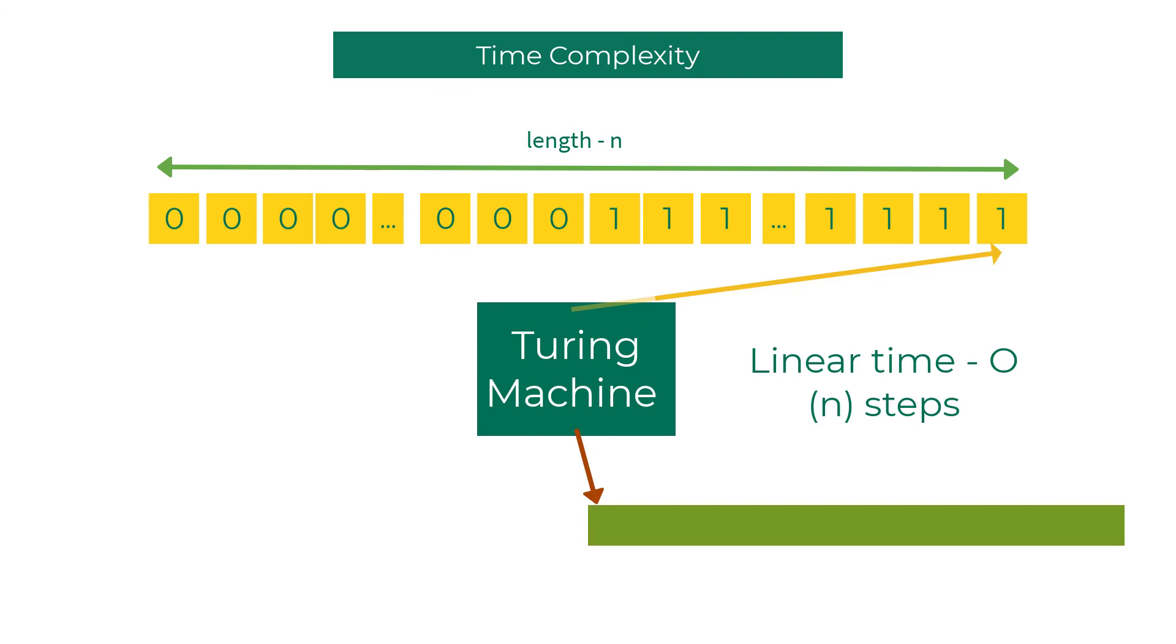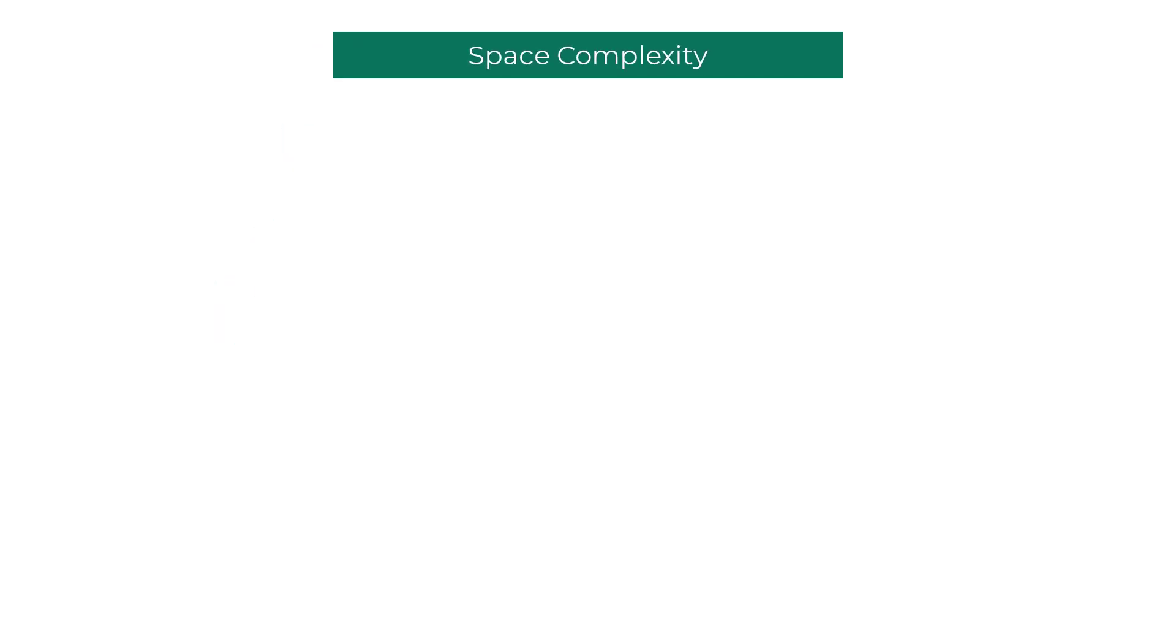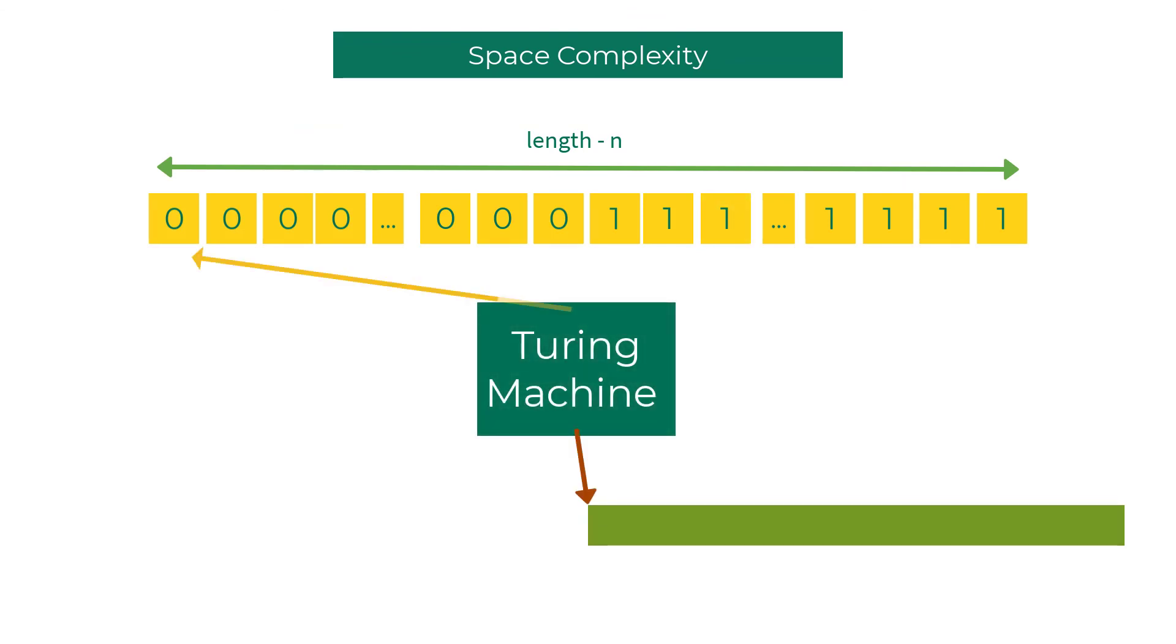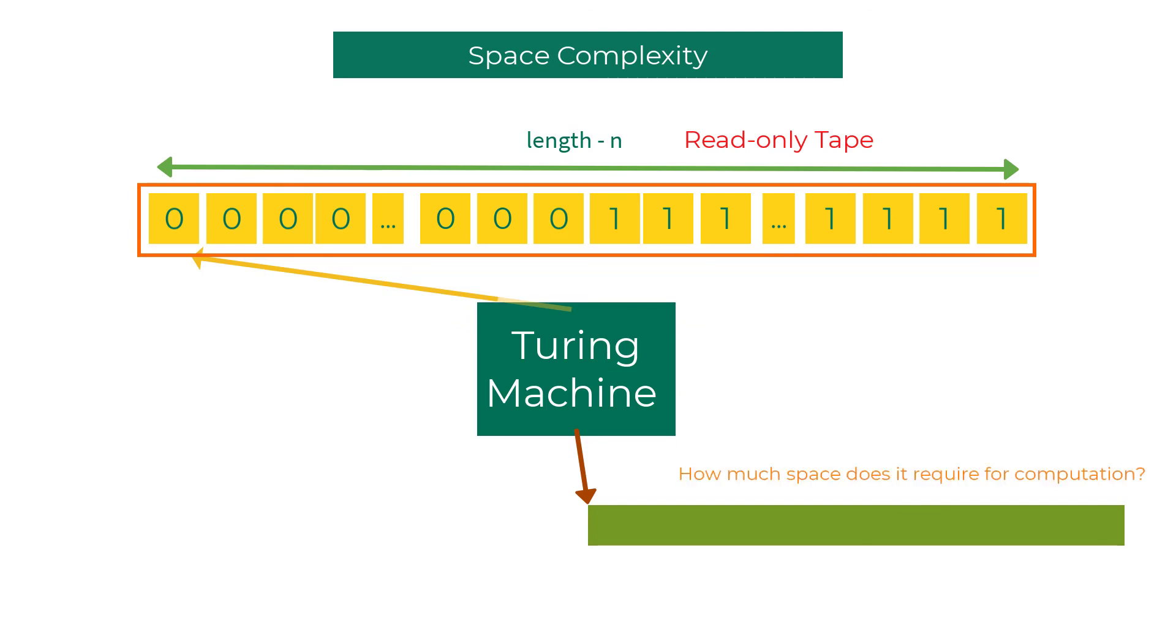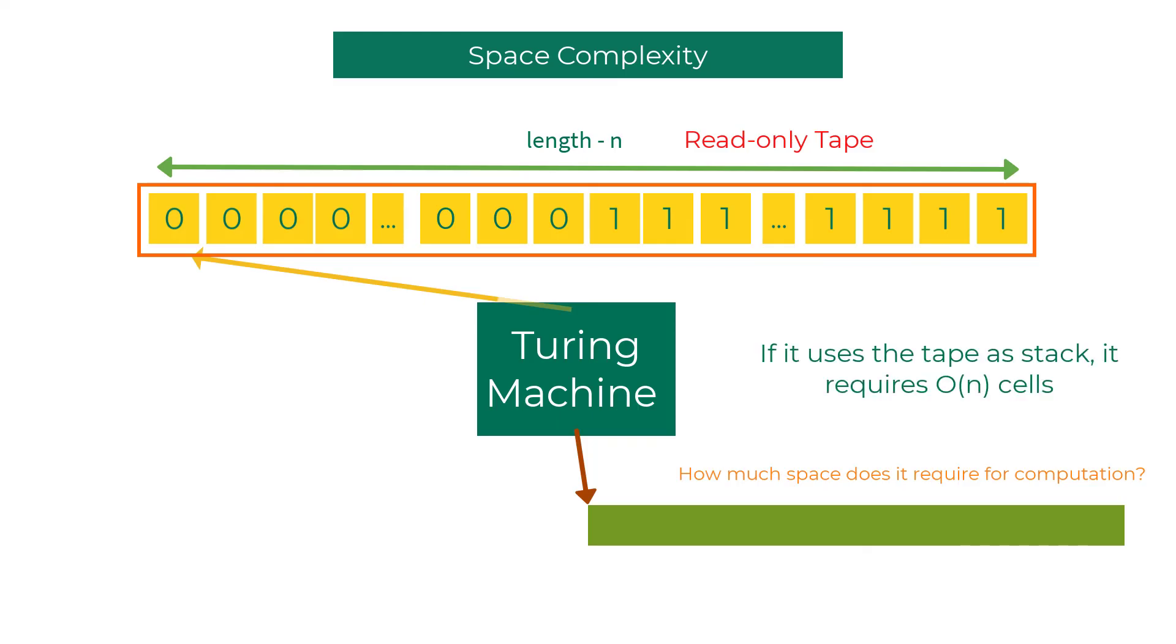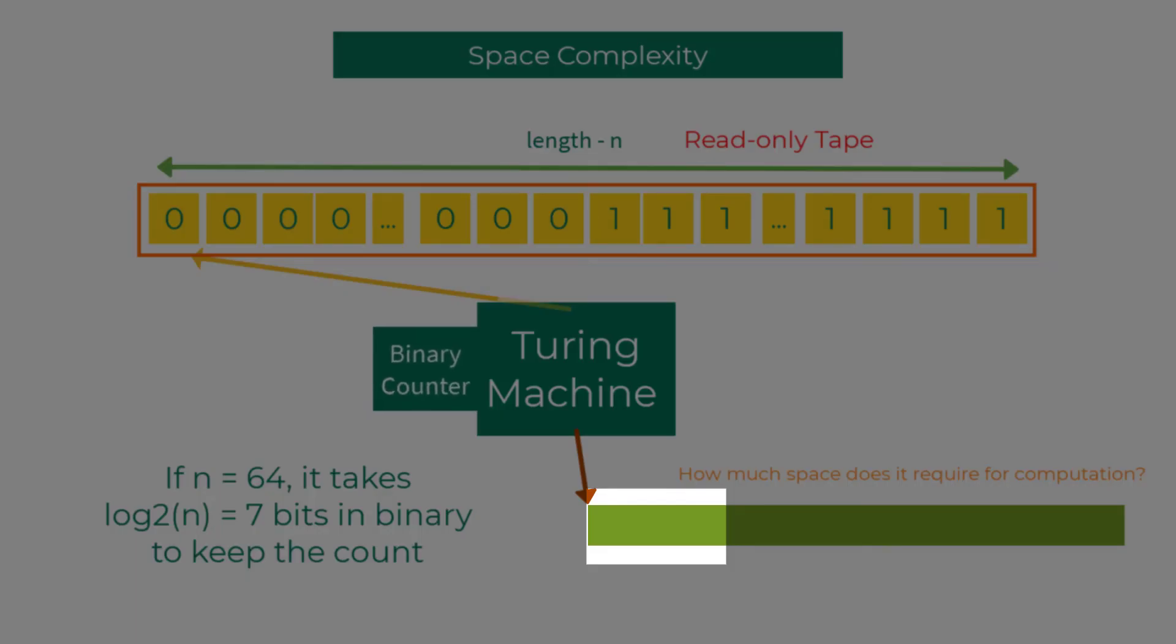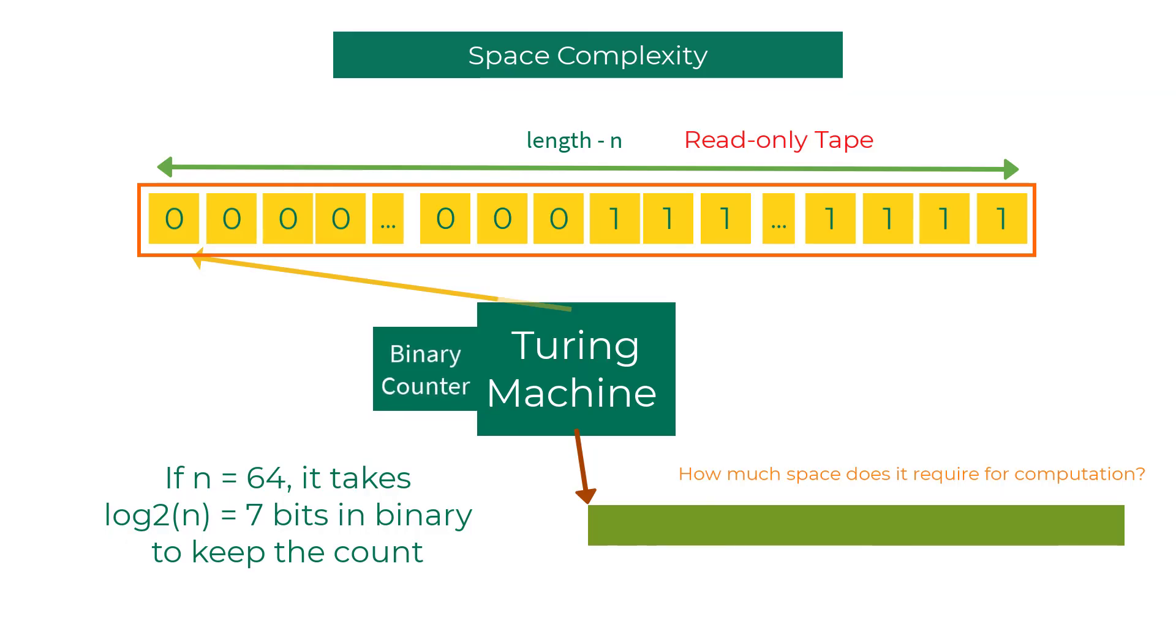All right, so let's wrap up by discussing space complexity. Here is the standard setup when you're going to evaluate the space complexity of a program. You're going to make the input tape as a read-only tape, and then you're going to evaluate how much space does it require for the computation. If we use the tape as a stack, then we'll be using O of n cells. But there is a better way of doing it. We could add this binary counter logic to the Turing machine control state. So if we have input of length 64, then we only need seven bits in the binary counter to keep the count. So we can solve this using O of log n space.